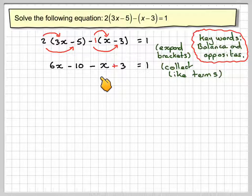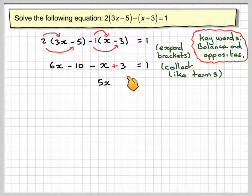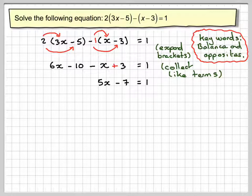We've got 6x and a minus x. That makes 5x. Minus 10 plus 3 makes minus 7. And we're still equal to 1.